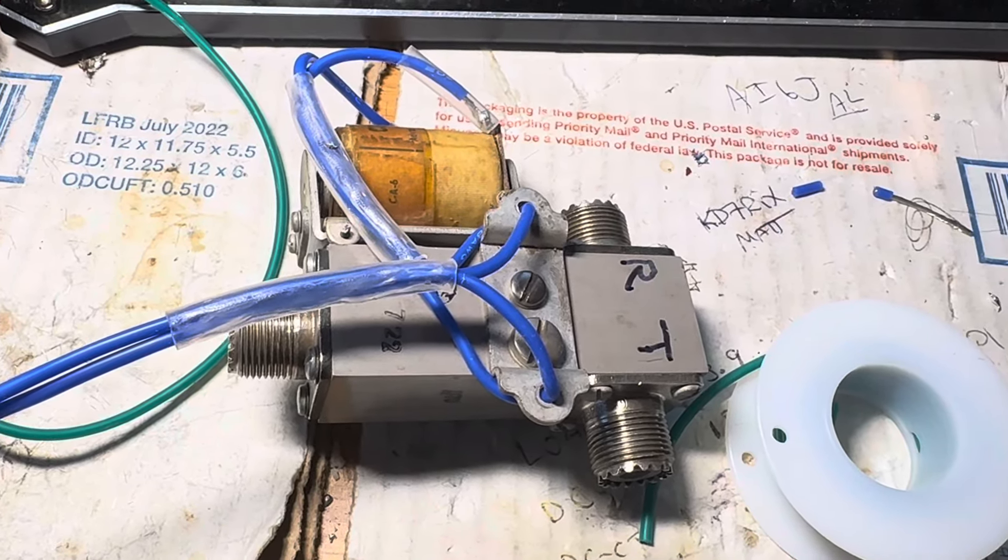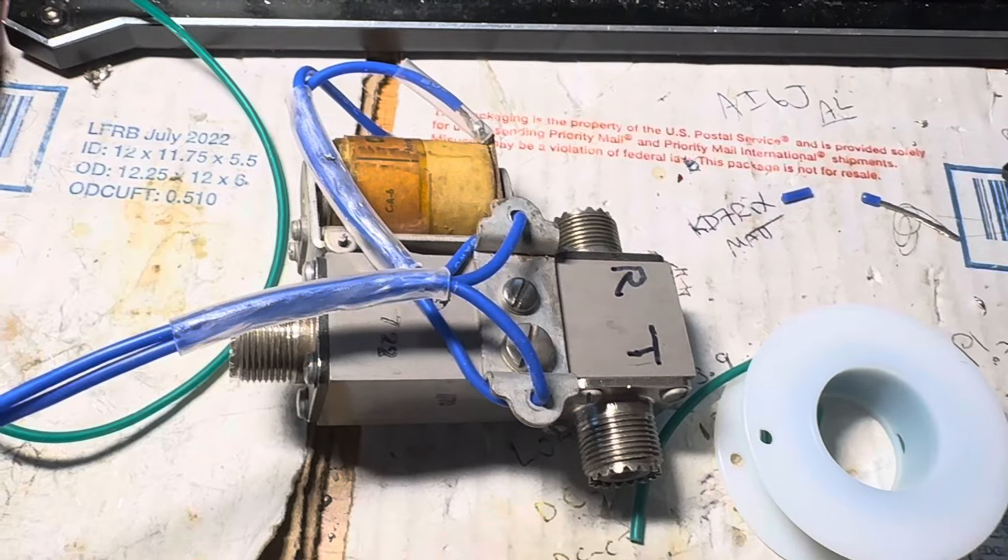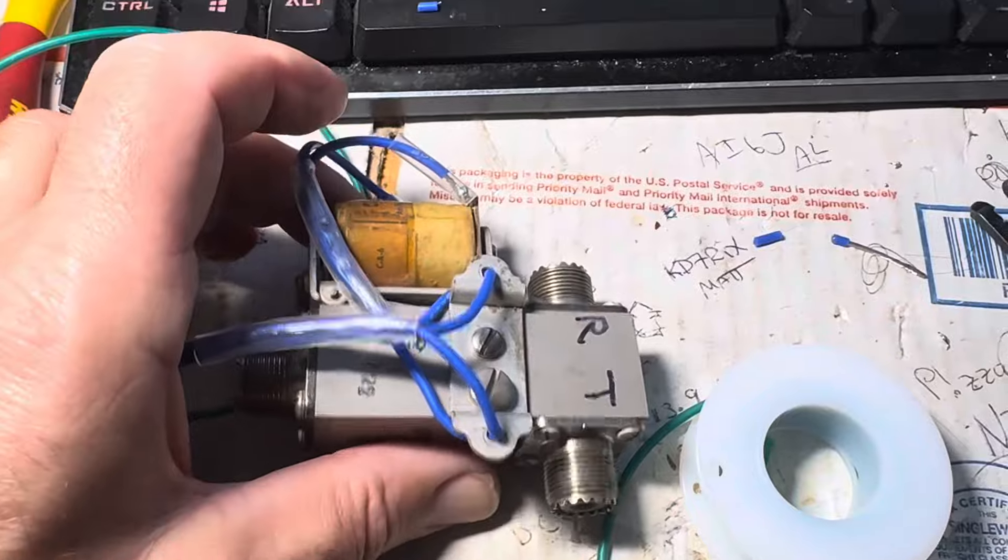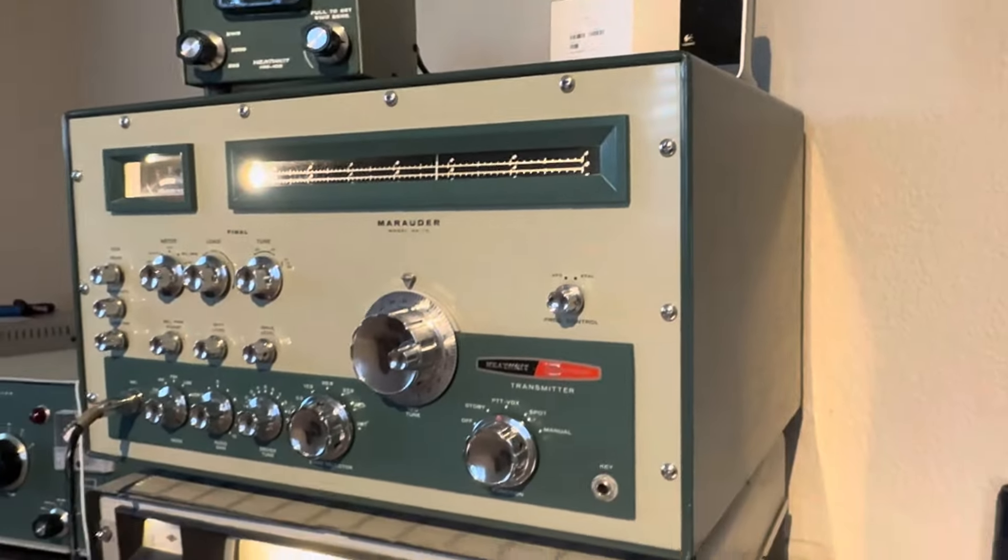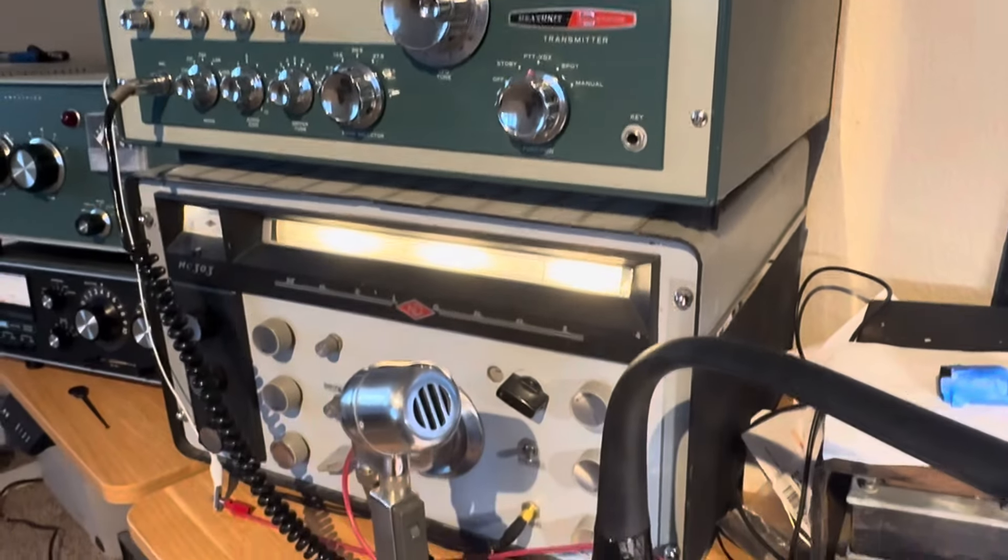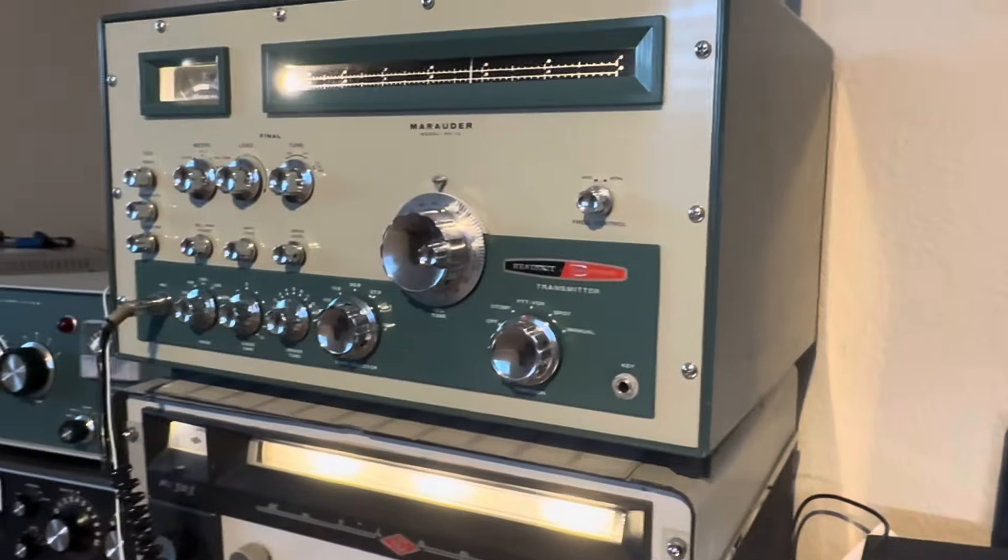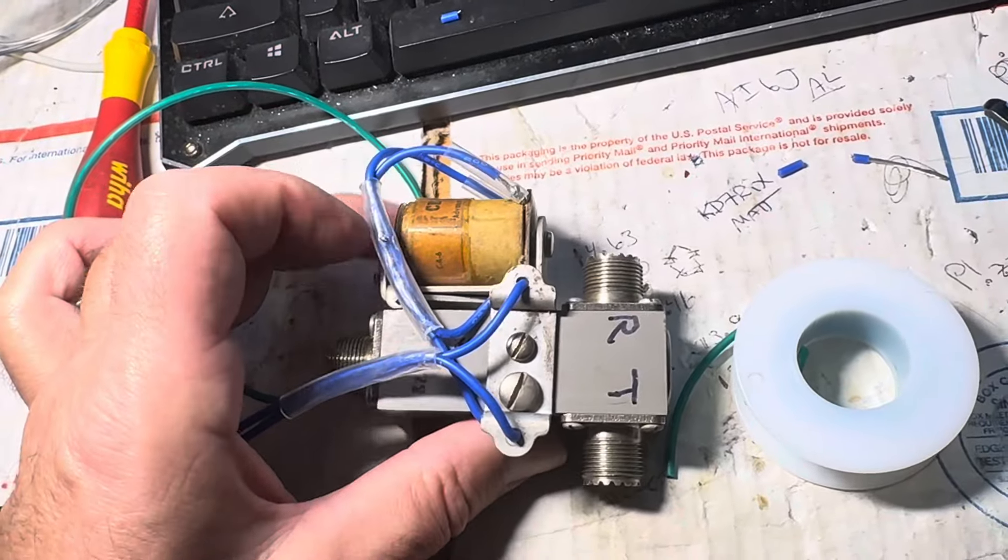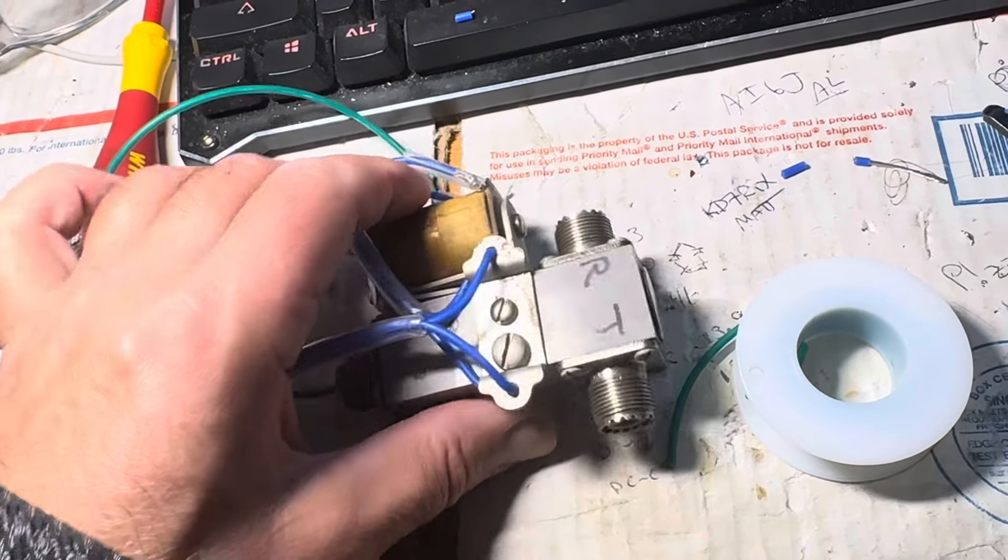Hello friends and followers. You might ask, what is this thing on the screen? This is a little TR relay. Since I have a 1950s amateur radio station here, there's a receiver on the bottom and the transmitter on the top, and there's really no transmit-receive relay inside those units.